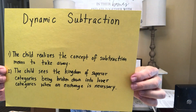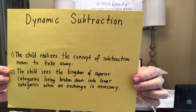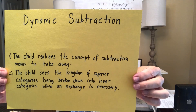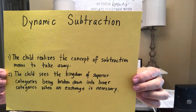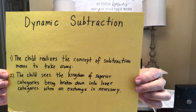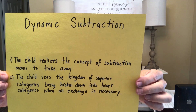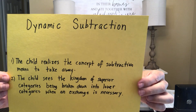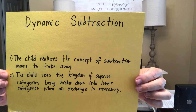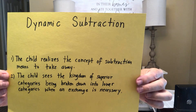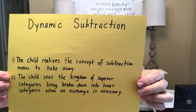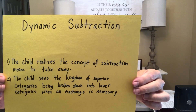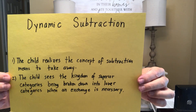Dynamic subtraction — the goal of this lesson is the child realizes the concept of subtraction, which means to take away, and that the child sees the kingdom of superior categories being broken down into lower categories when an exchange is necessary.